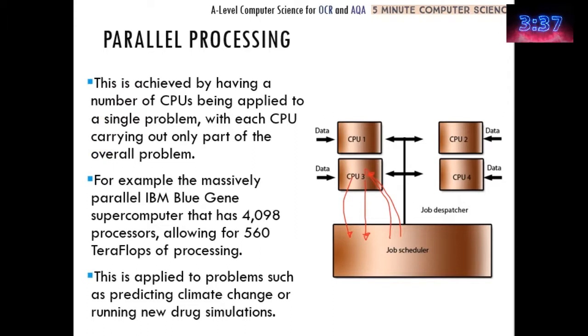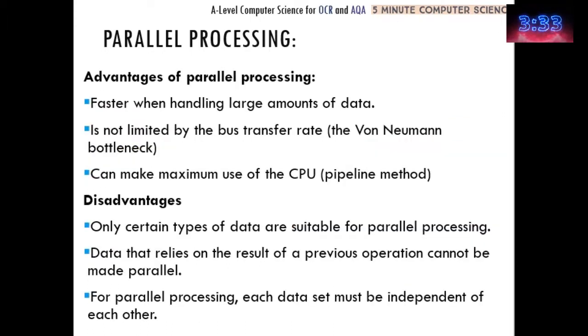So it might look really good, and it is. Parallel processing has several advantages: you can use pipelining to make things very quick, and you can avoid the Von Neumann bottleneck because no processor ever just sits there waiting - it keeps getting new jobs from the scheduler.